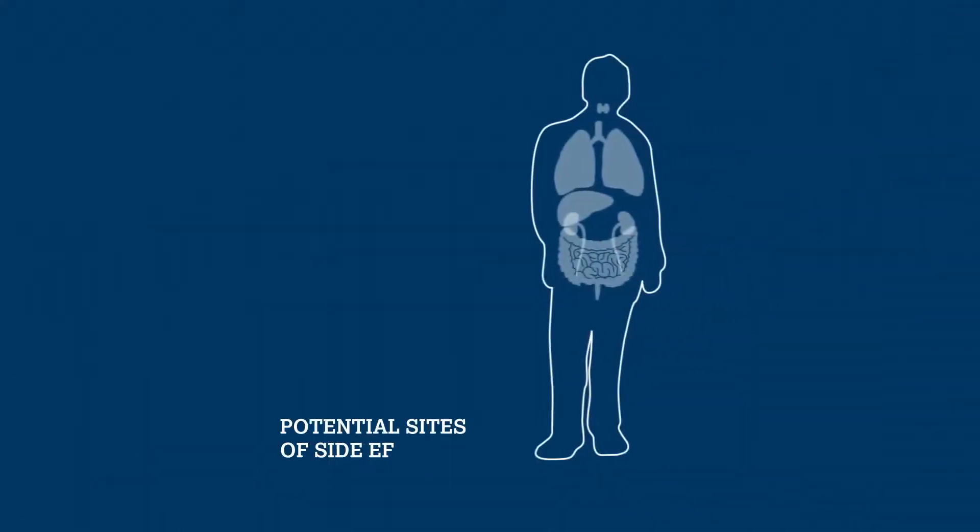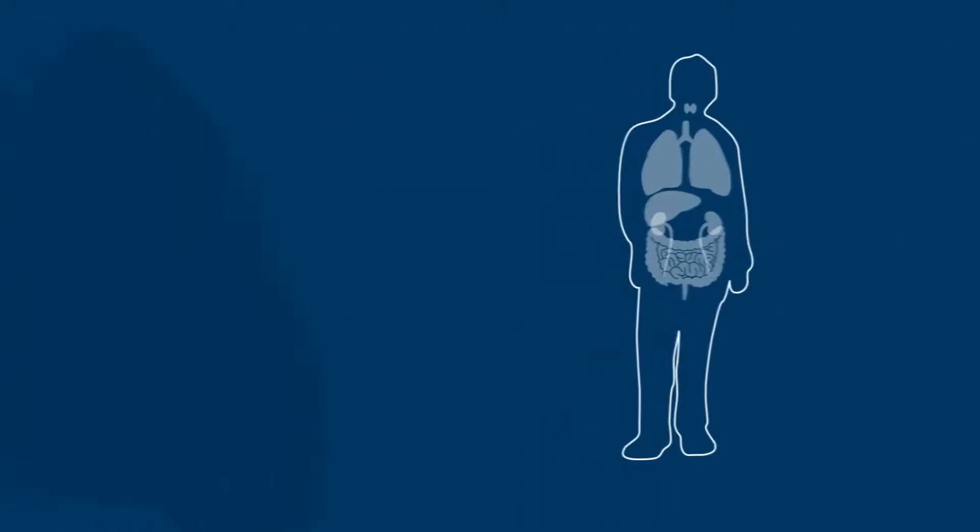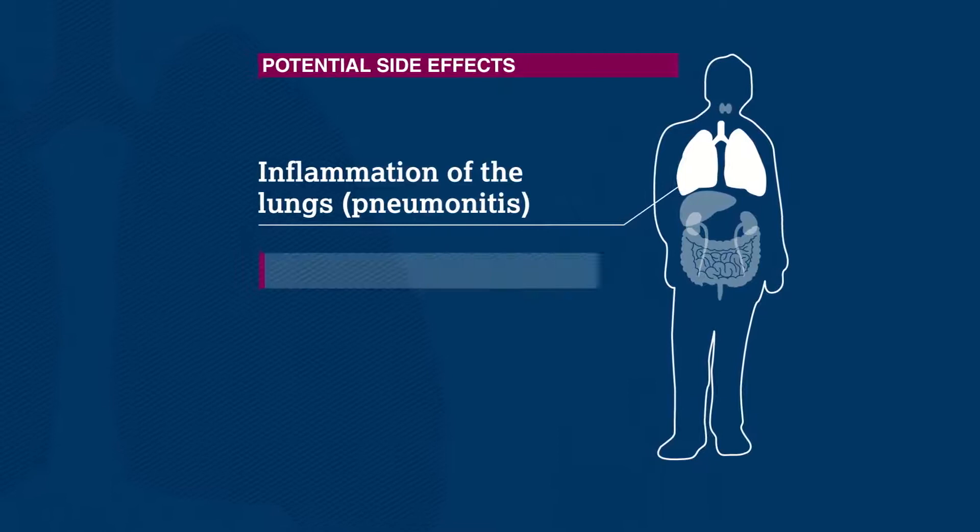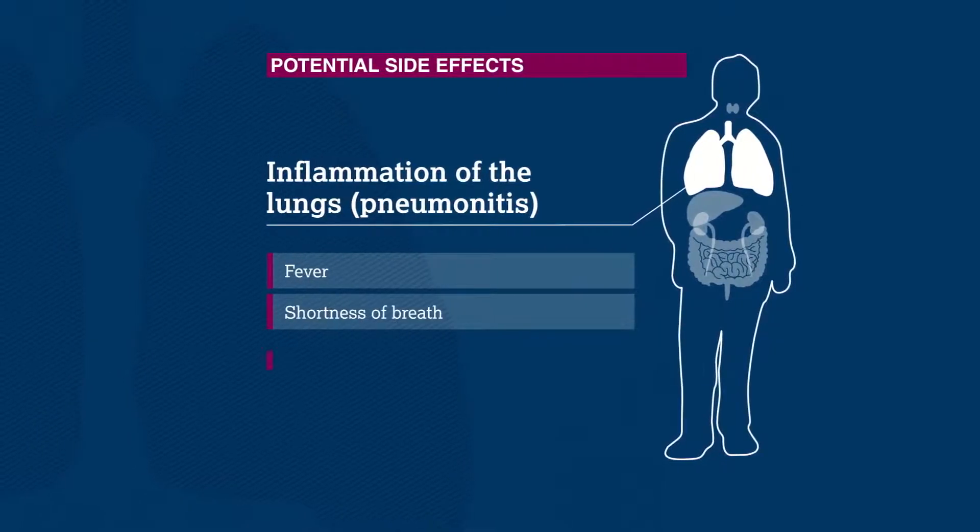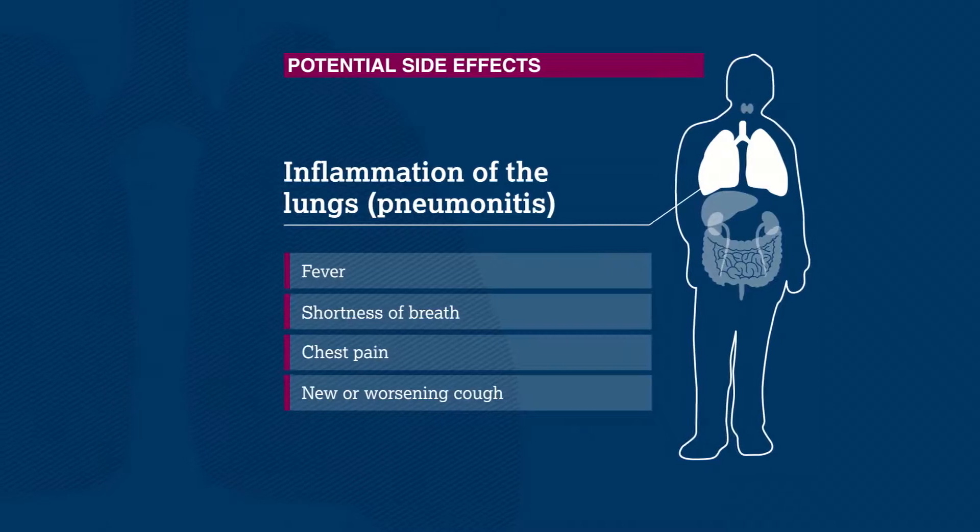So, let's talk about a few of the more common side effects that some people experience. To start, immunotherapy may affect some patients' lungs. In these cases, they may have fever, shortness of breath, chest pain, or a cough that keeps getting worse and worse.